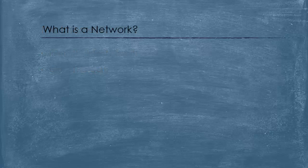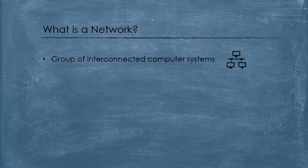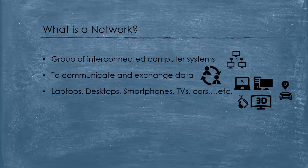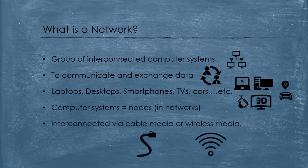A network is a group of computer systems, two or more, interconnected together for the sake of communicating and exchanging data using links. These computer systems, whether they are laptops, desktops, smartphones, TVs, cars, etc., are called in terms of the network, nodes. These nodes establish connections between them using either cable media or wireless media.